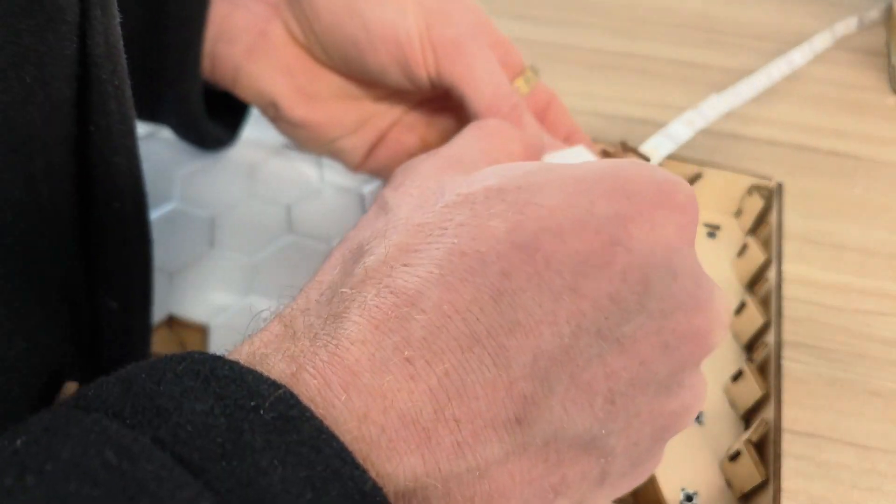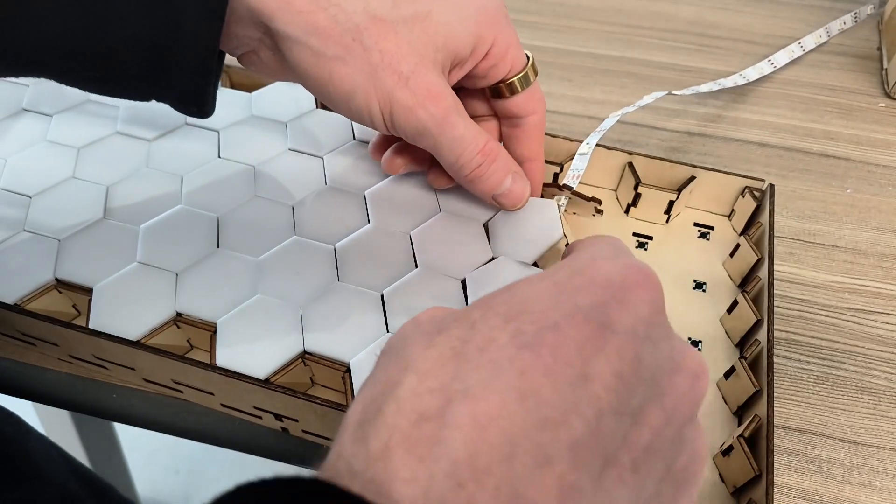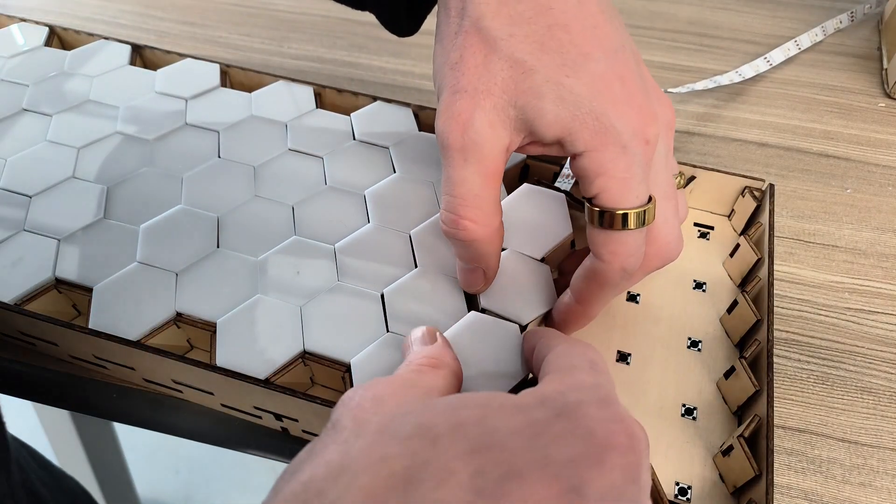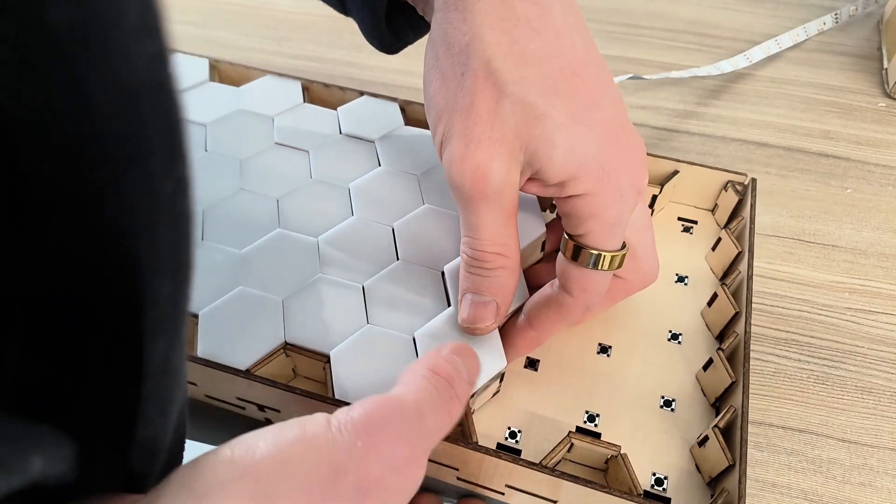And just make sure the end ones have the slots as the base because it will need to feed through the bottom. And then we'll put the very first hexagon on.